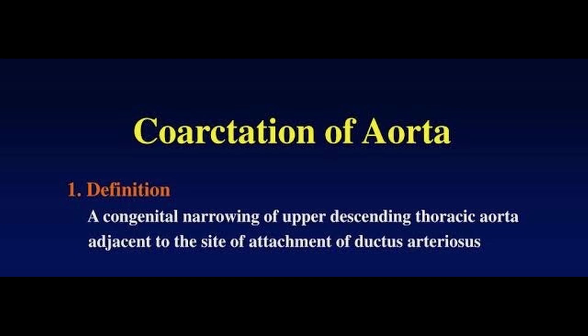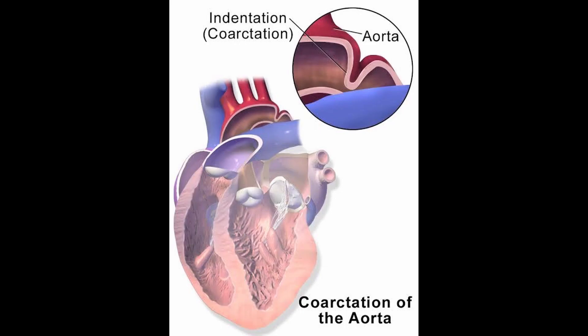The second condition is coarctation of the aorta, which is a congenital narrowing of the upper descending thoracic aorta adjacent to the site of attachment of the ductus arteriosus. There is a narrowing of the descending thoracic aorta that leads to coarctation of the aorta, as you can see on the diagram.